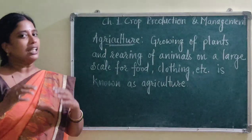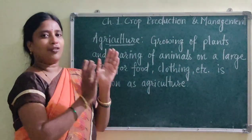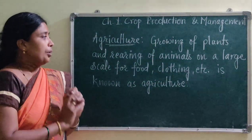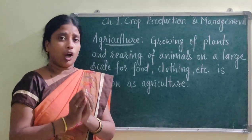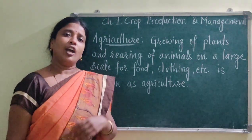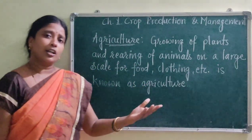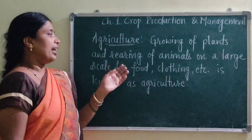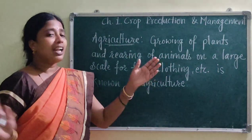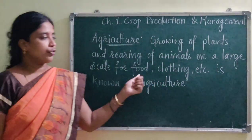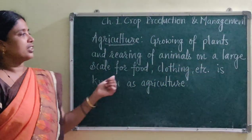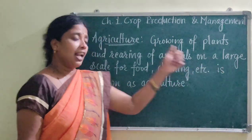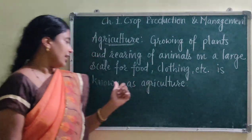What is the difference between agriculture and normal gardening? Suppose I have grown some tomatoes, brinjal, and other vegetables in my garden, but these are in small amounts. These small amounts cannot fulfill the need of the population. When you grow these plants on a large scale in one field, for food, clothing, and other purposes, this process is known as agriculture.